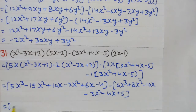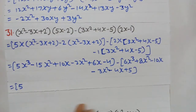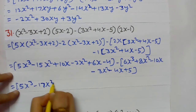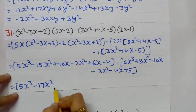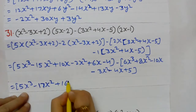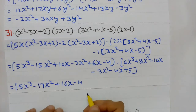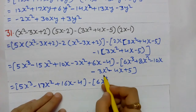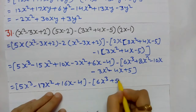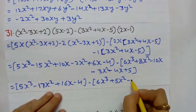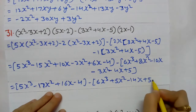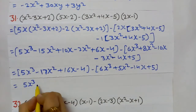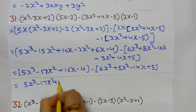Now solving like terms in the first bracket: 5x³ as it is. minus 15x² − 2x² = −17x². 10x + 6x = 16x. Minus 4 as it is. In the second bracket: 6x³ as it is. 8x² − 3x² = 5x². Minus 10x − 4x = minus 14x. Plus 5 as it is. Students, open the bracket.